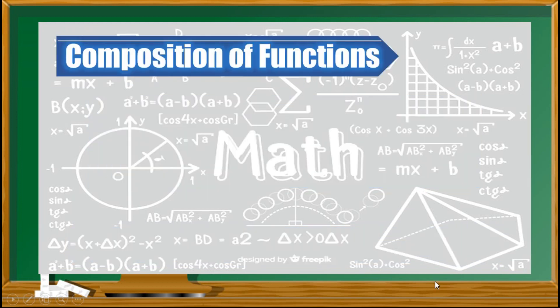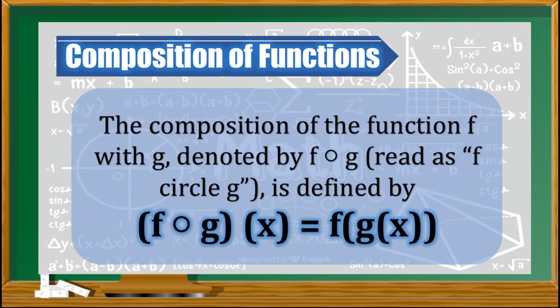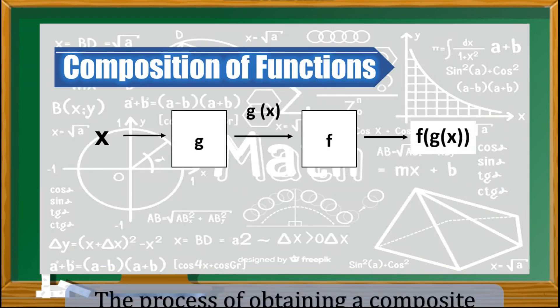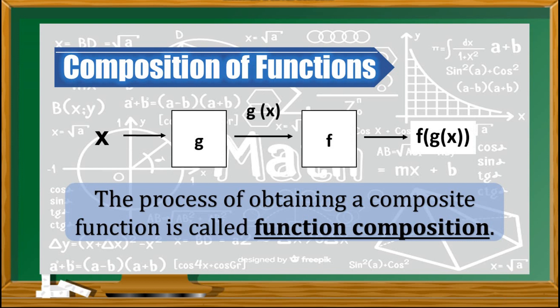So now, let's take a look at its definition. Composition of functions: the composition of function f with g, denoted by f∘g, is defined by (f∘g)(x) = f(g(x)). As you can see here, g(x) being a function is an input in f(x). As illustrated in the diagram, x is being placed in g, and the result is g(x), then afterwards it will be placed or substituted in f, and then the result would be f(g(x)).